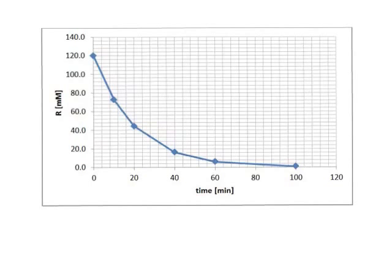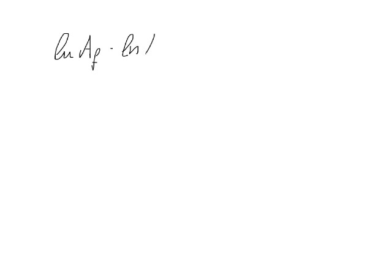Now curves are always very tricky to deal with, and we can't really do a lot with a curve. But we can use the equation for a first-order reaction and try to transform it into a straight line. So we said that one of the equations for a first-order reaction is: ln R_final minus ln R_initial equals minus k times (T_final minus T_initial).